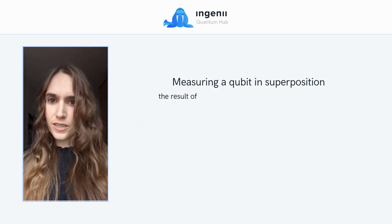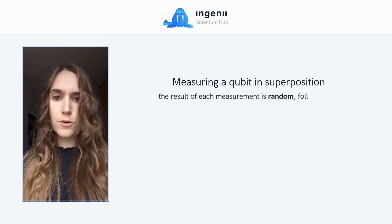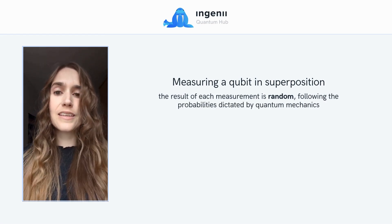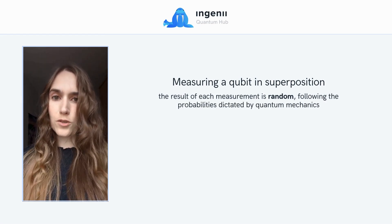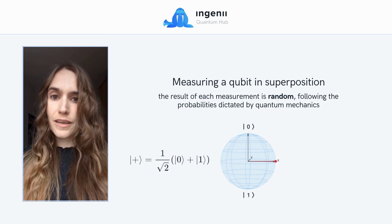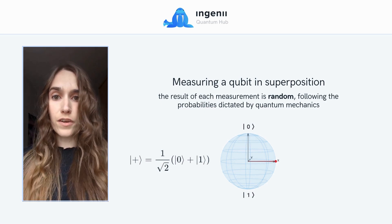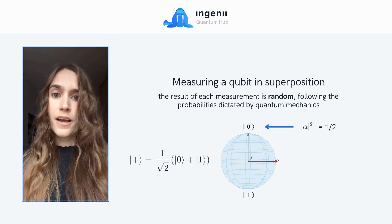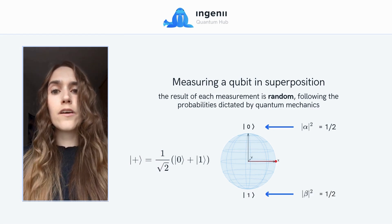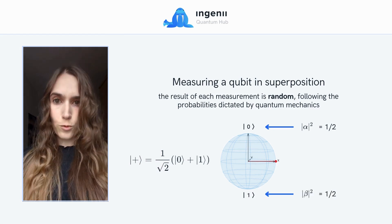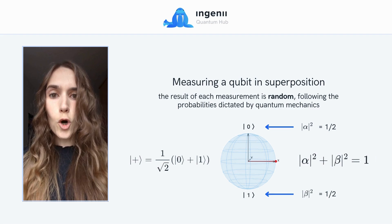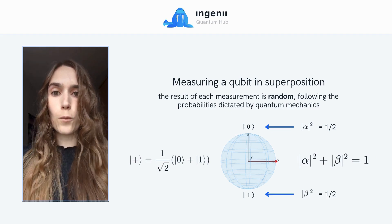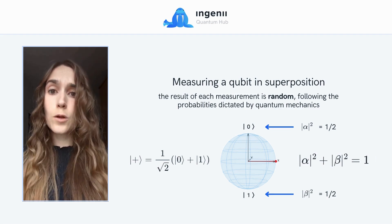But what's interesting is that the result of each measurement is random. The outcome follows the probabilities dictated by quantum mechanics. If a qubit is in the general state of the Bloch sphere, the probability of measuring 0 is alpha squared, and the probability of measuring 1 is beta squared. These probabilities always add up to 1 because the qubit must be in one of these two states when measured.